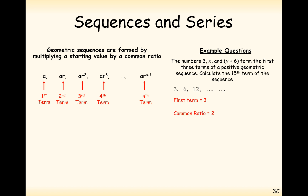The first term is 3 and the common ratio is 2, so the 15th term is going to be 3 times 2 to the power of 14 — one less than the 15th term we want — which gives us an answer of 49,152.